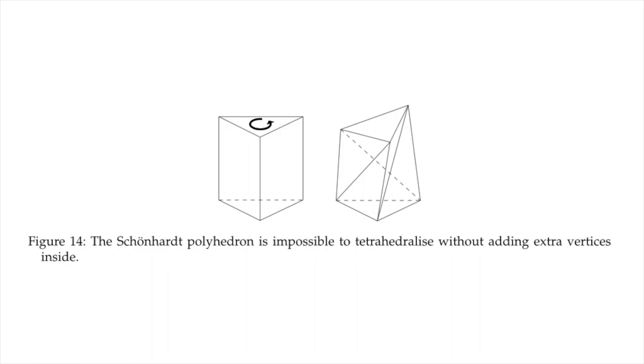The simplest example is this one, called the Schoenhardt polyhedron, named after the mathematician who described it nearly 100 years ago. It's a very simple polyhedron, it has 8 triangular faces and yet it can't be tetrahedralized.